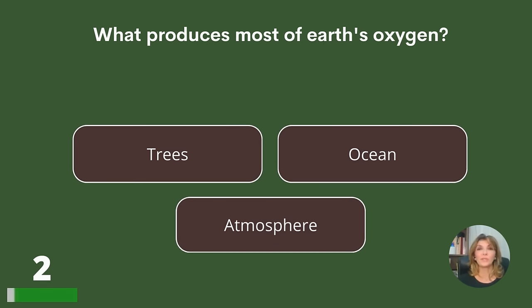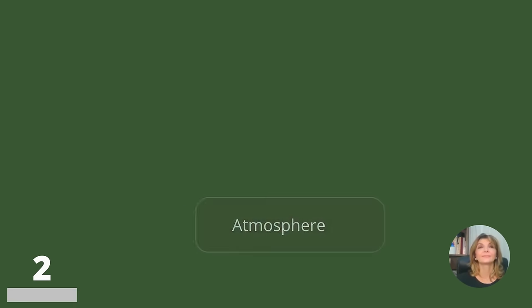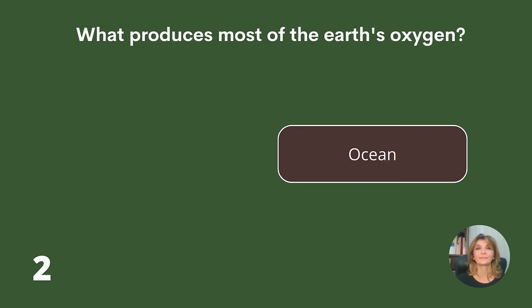What produces most of Earth's oxygen? Trees, the ocean, or the atmosphere? Answer: The oceans.